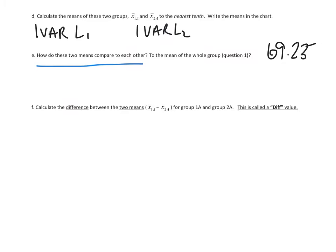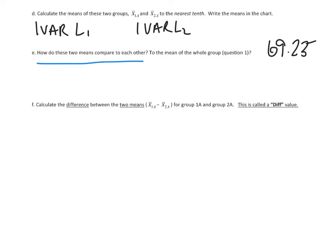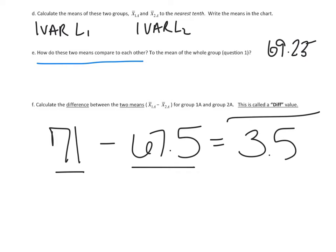Now here's the big question of the day. Calculate the difference between the two means. That is group one minus group two. This is called a diff value. Okay, so diff, obviously coming from the word difference, we need to calculate the difference of the two means. So as I calculated the difference between my two, I got a difference value of 3.5. And again, I want to label that with diff, that is the difference of the two means.